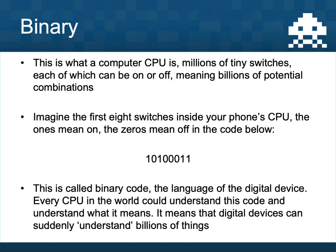That basic example is exactly what a computer's CPU is. A CPU is millions of tiny switches in a row that can either be on or off, and those millions of switches give us billions of different combinations. A modern computer can represent 16 million different colours by switching them on and off in different combinations. The first eight switches inside your phone's CPU might look like 10100011 — ones mean on and zeros mean off. That is called binary code, and that's how all our digital devices work.